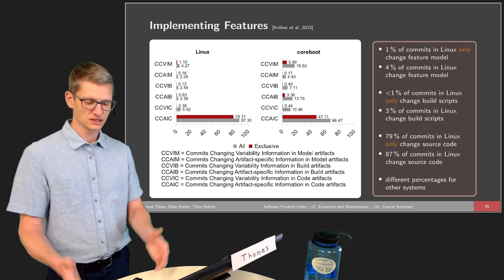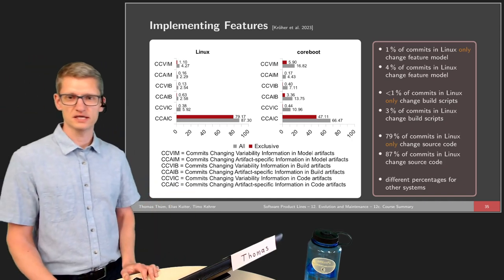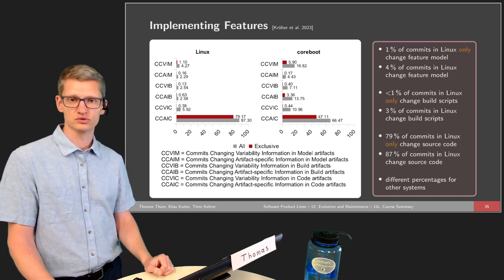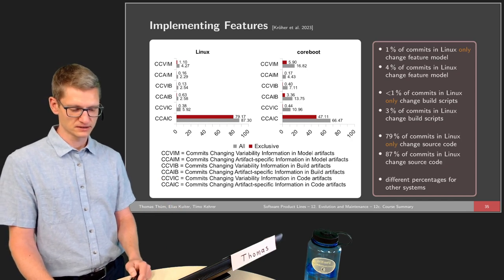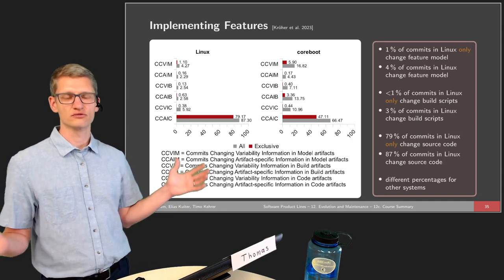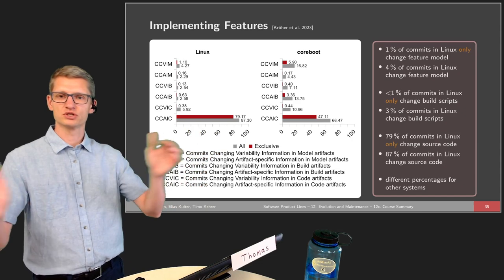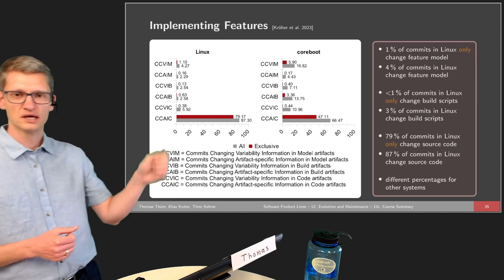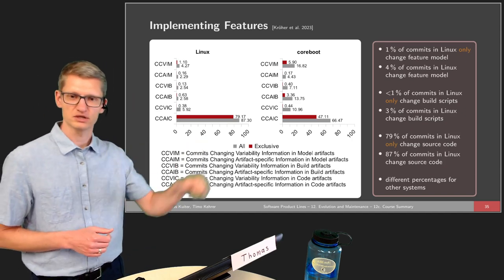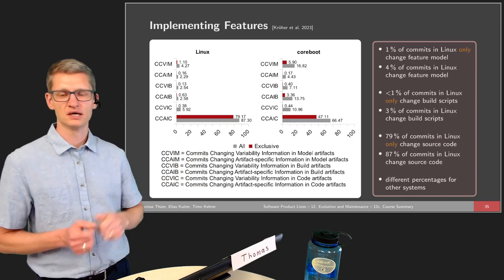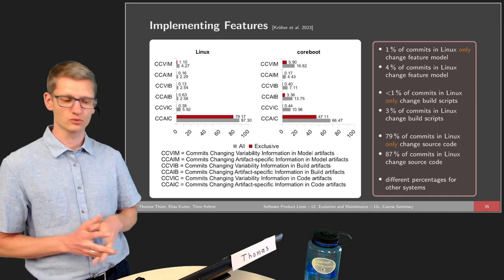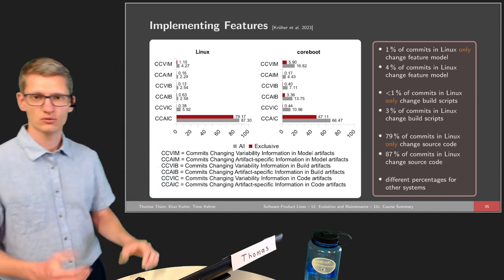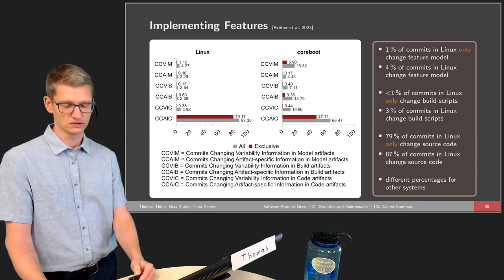In this course, we looked at implementing features and where implementation happens. We see that most changes actually occur at the implementation level, but there are also frequent changes to the feature model and to the variability made available. This contrasts with the classic idea of domain engineering where you do domain analysis once and never return. In reality, it's a frequent and iterative process — if we find problems in design or implementation, we go back to domain analysis, change the feature model, and go back again. In Linux, for instance, about 4% of changes also modify the feature model.